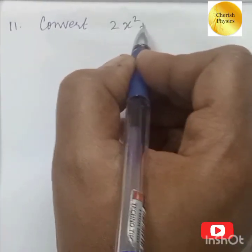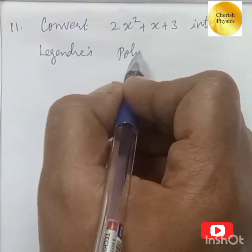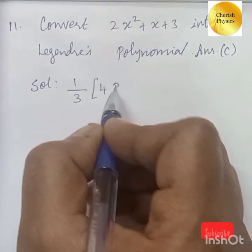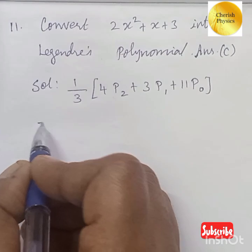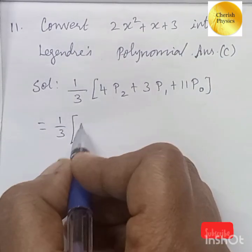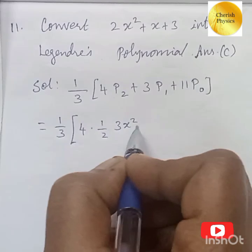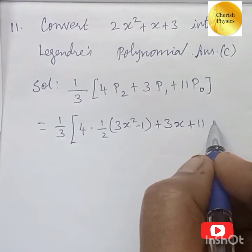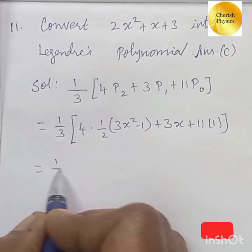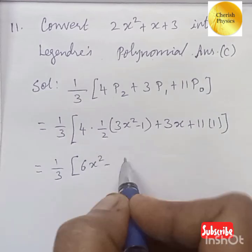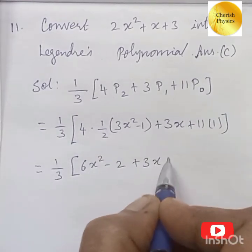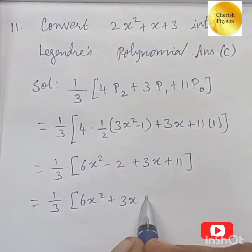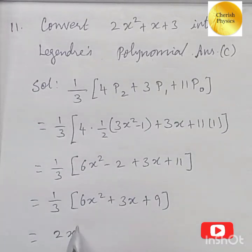11th question: convert 2x² + x + 3 into Legendre polynomial. The answer is option C: (1/3)(4P₂ + 3P₁ + 11P₀). Substituting values: (1/3)[4·(1/2)(3x²−1) + 3x + 11]. Cancelling gives (1/3)(6x² − 2 + 3x + 11) = (1/3)(6x² + 3x + 9). Dividing by 3 gives 2x² + x + 3. Confirmed.